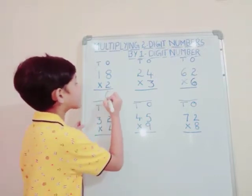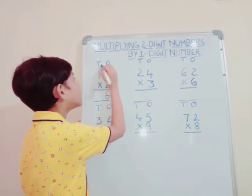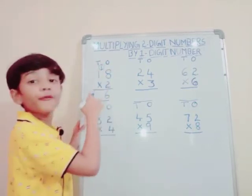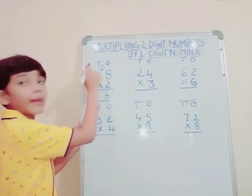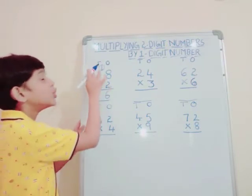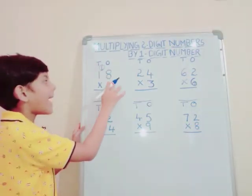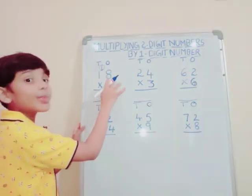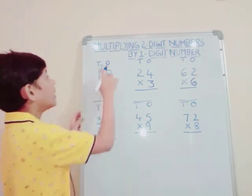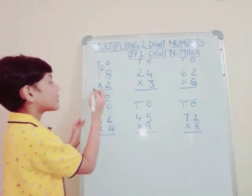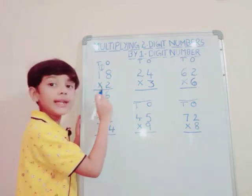We should write 6 and carry up 1 in the 10's place. Don't forget to carry up 1 in 10's place. Now the 10's place — we should multiply the 10's digit number by 2. That is 2×1=2. Then 2 plus 1 equals 3. Our first sum answer is 36.